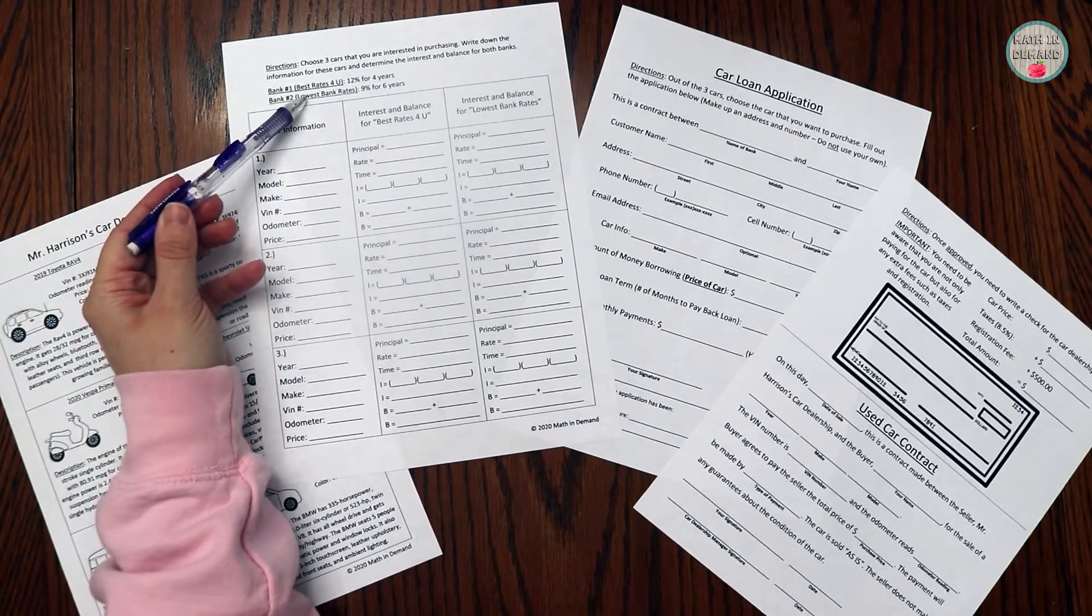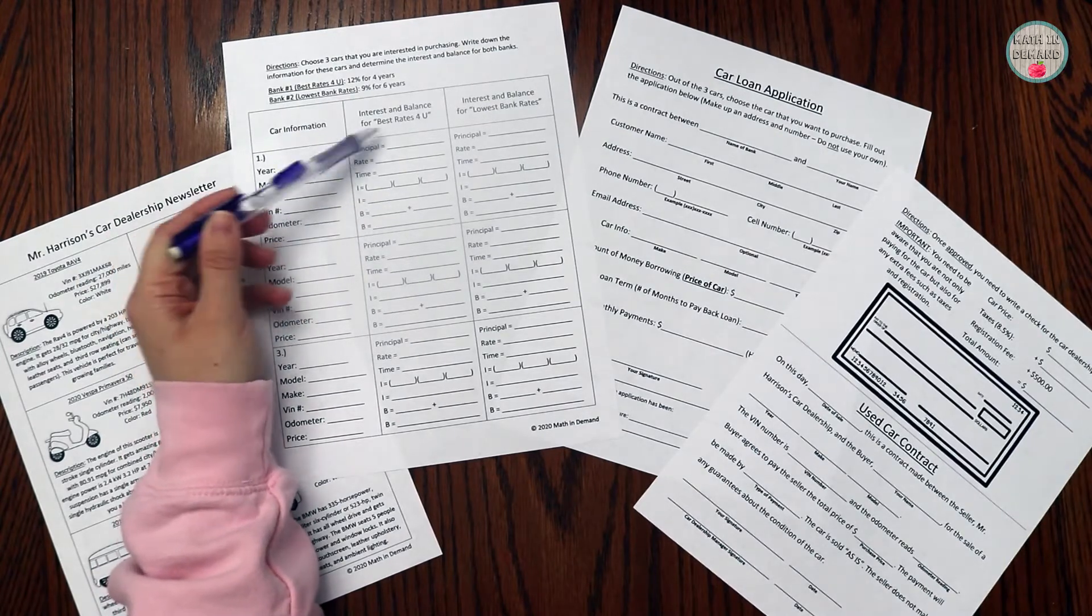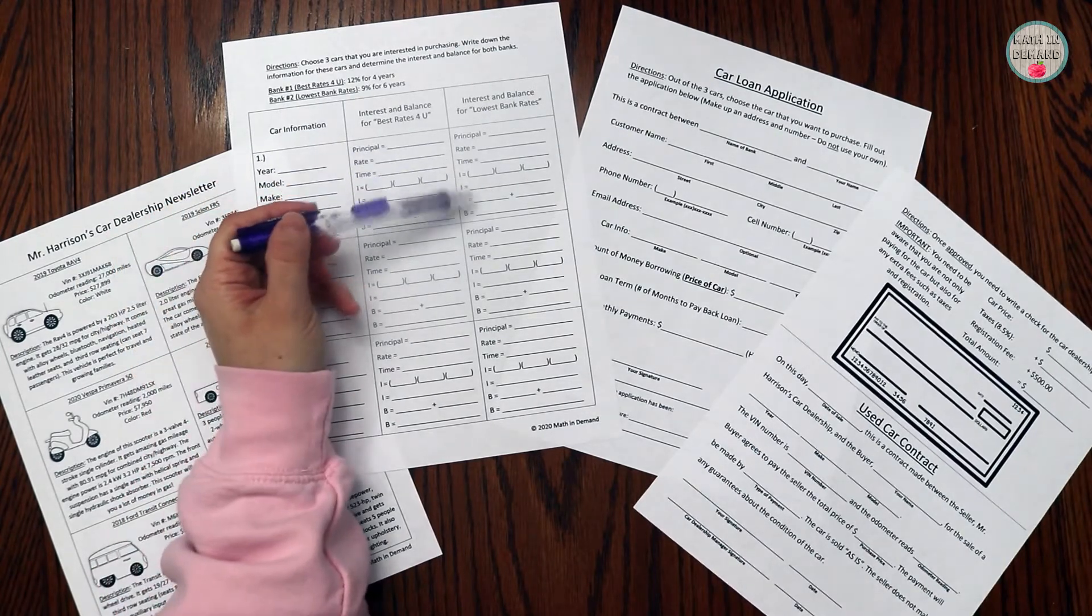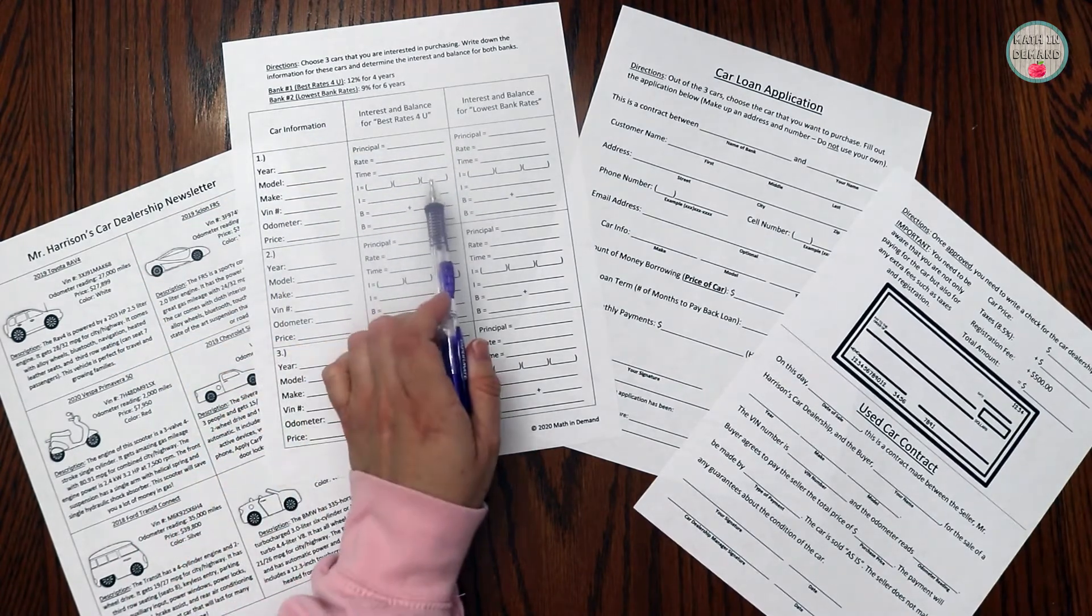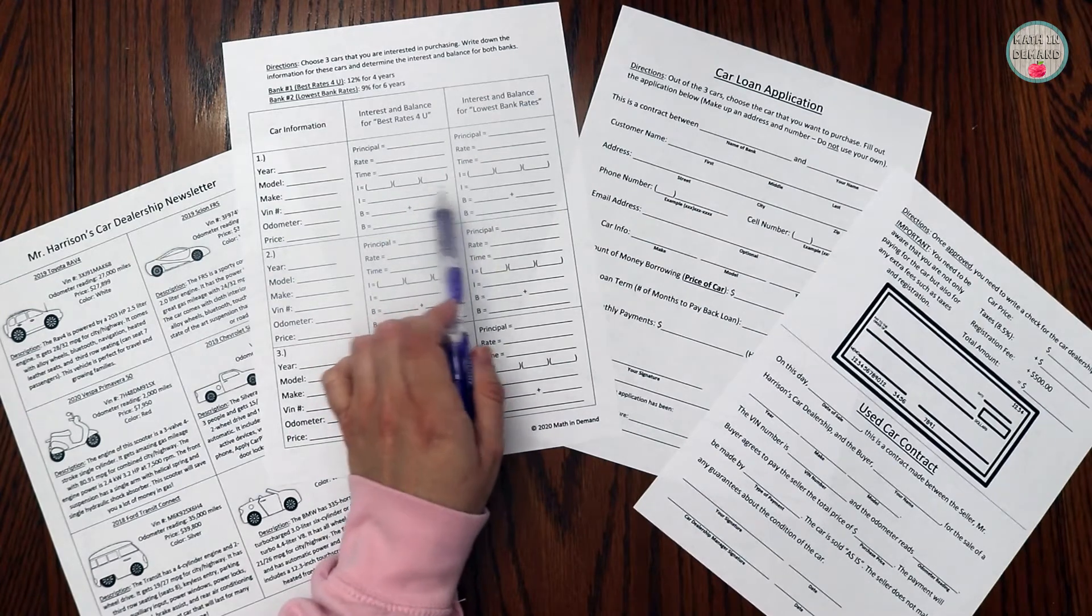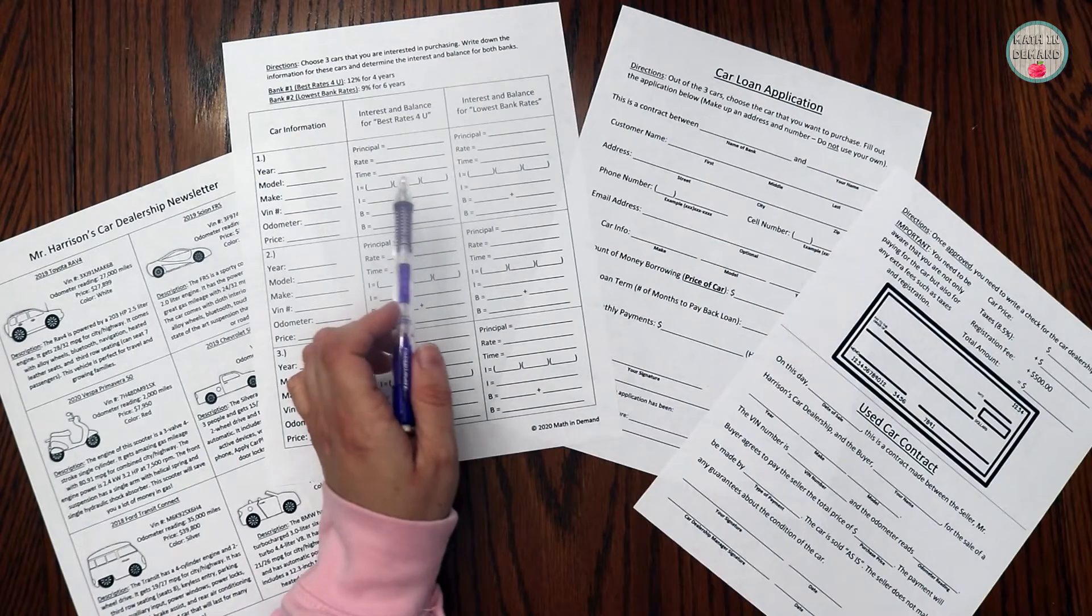Students will take that information and calculate the interest and balance for the first bank and the interest and balance for the second bank for each vehicle that they have chosen. They will then determine which one gives them the best value and which bank they would like to go with to purchase a car.